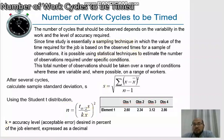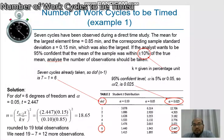So how to apply this N number of work cycles to be timed formula? We take this example 1. Seven cycles have been observed during the direct time study. The mean for the largest element time is 0.85 minutes, and the corresponding sample standard deviation S is 0.15 minutes, which was also the largest.